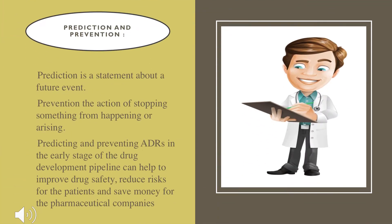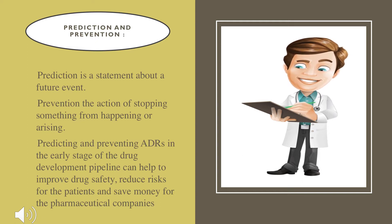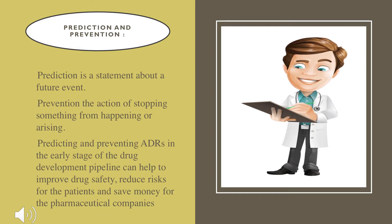Prediction is nothing but assuming about a future thing. For example, you say tomorrow it may rain — something is happening in the future and you are predicting it before. That is called prediction. When it comes to prevention, something is going to happen and you are going to stop it. Both prediction and prevention play a major role to improve patient safety and reduce the risk of drugs.